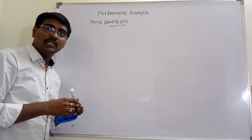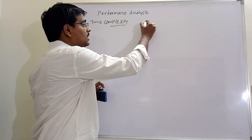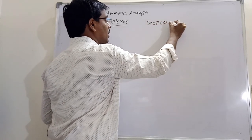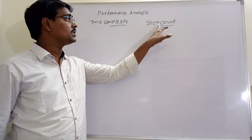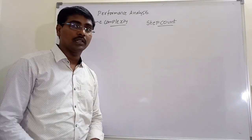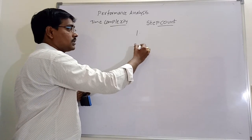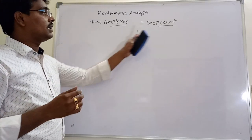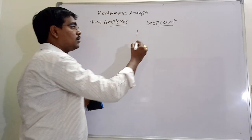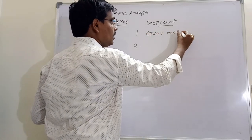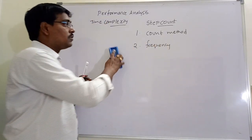Time complexity means the amount of time needed by the algorithm for completing the task. Time complexity of an algorithm is calculated based on step count. Step count means how many number of steps are needed for execution. To calculate step count we are using two methods: one is the count method, and the second one is the frequency count mechanism.